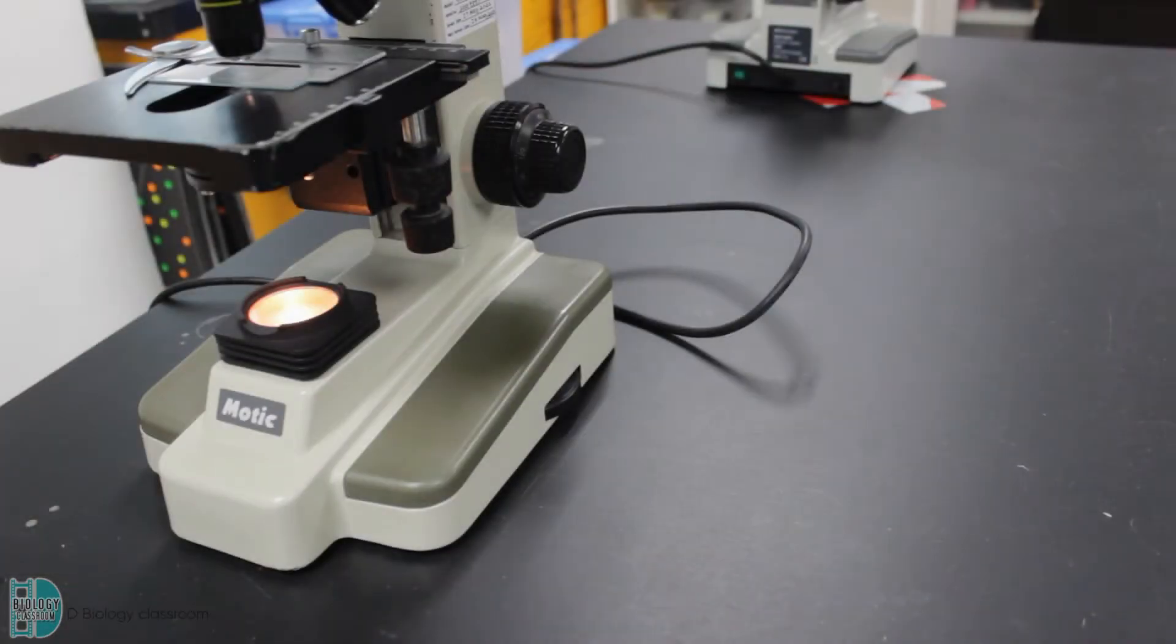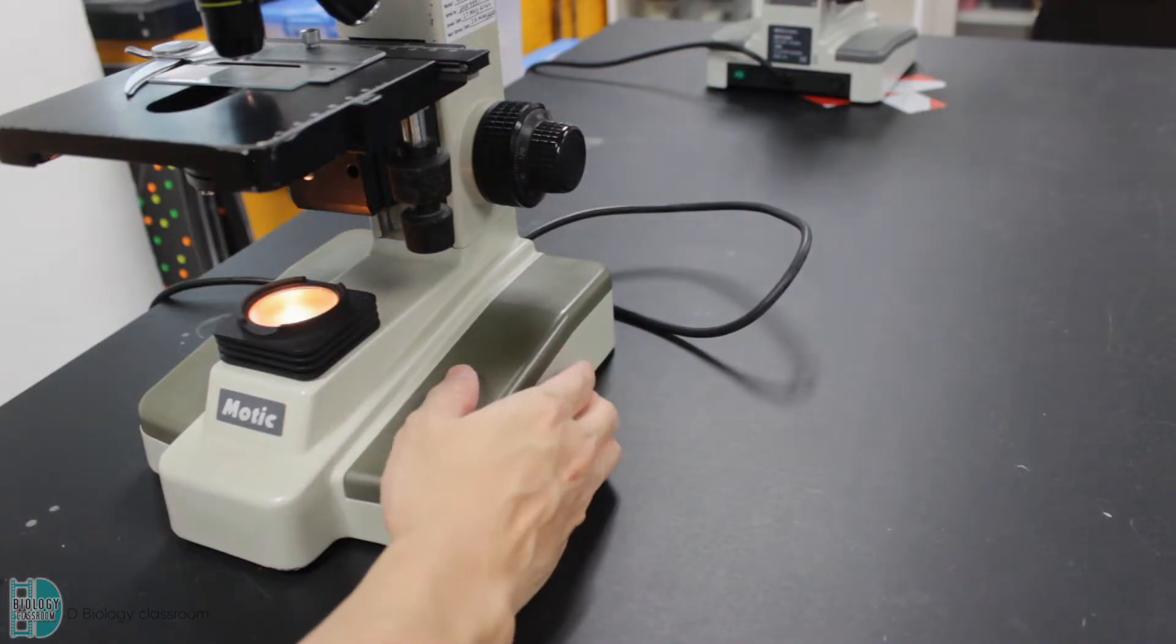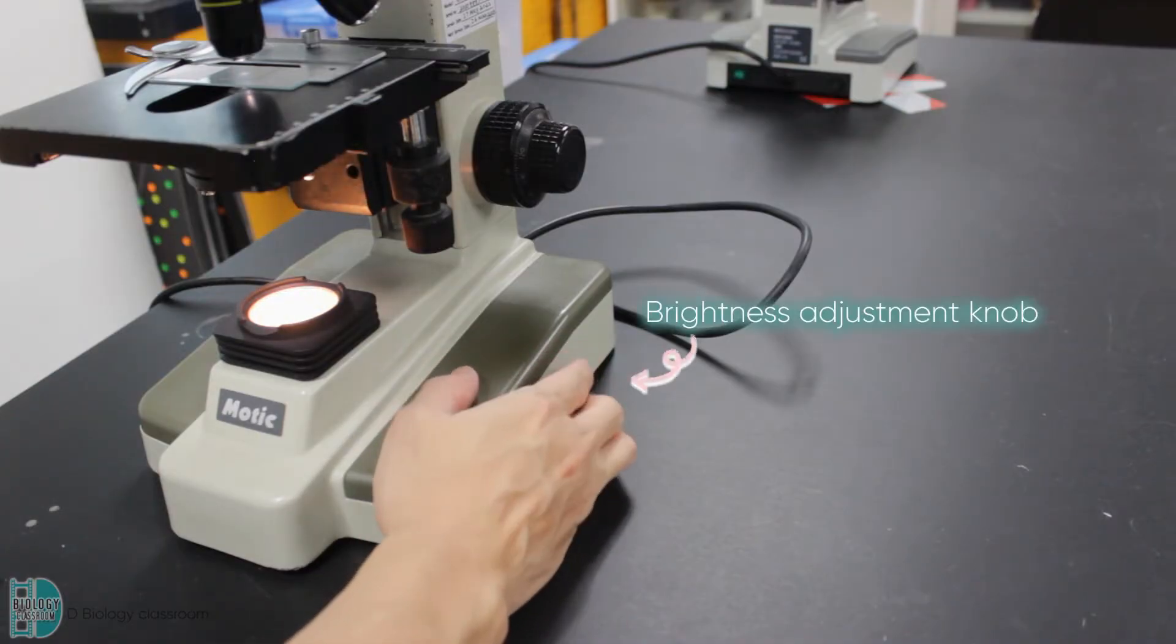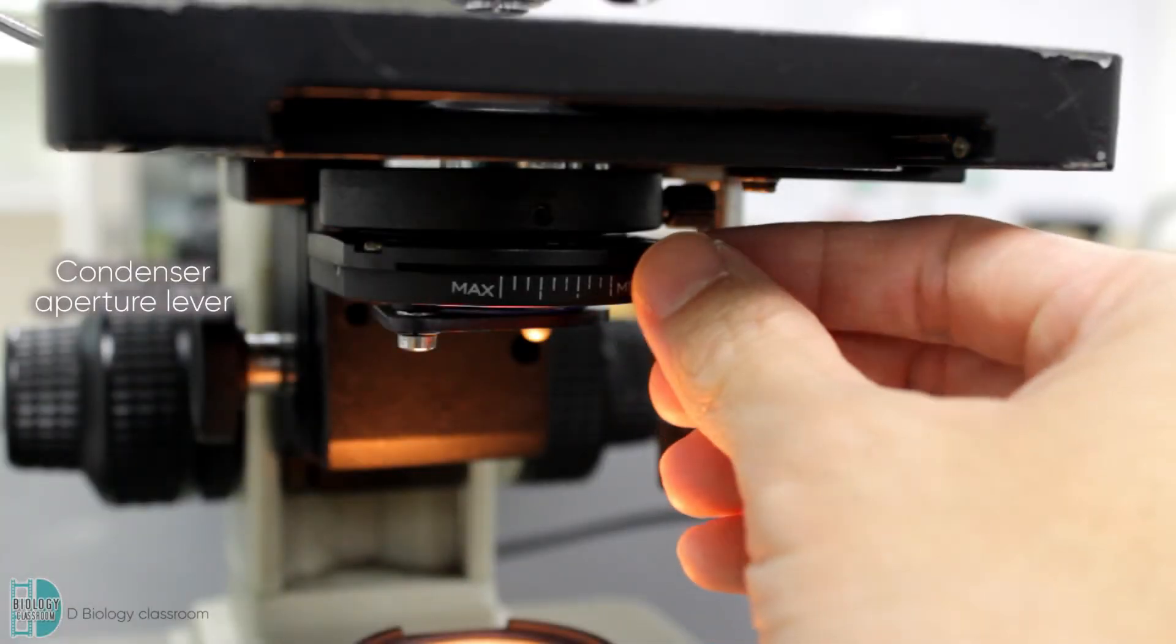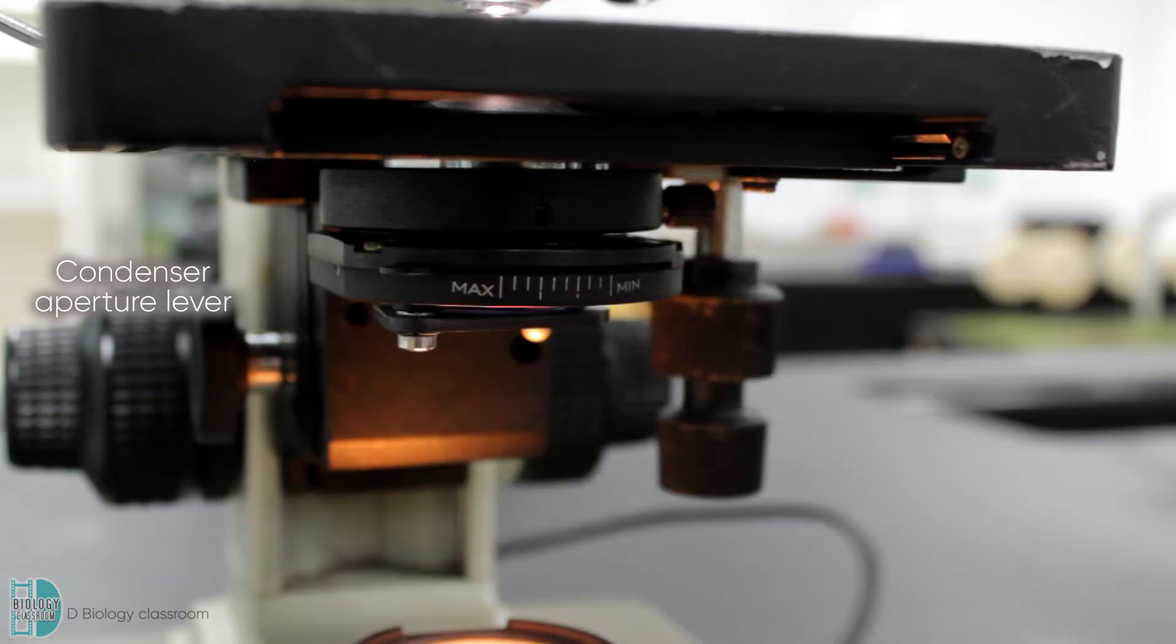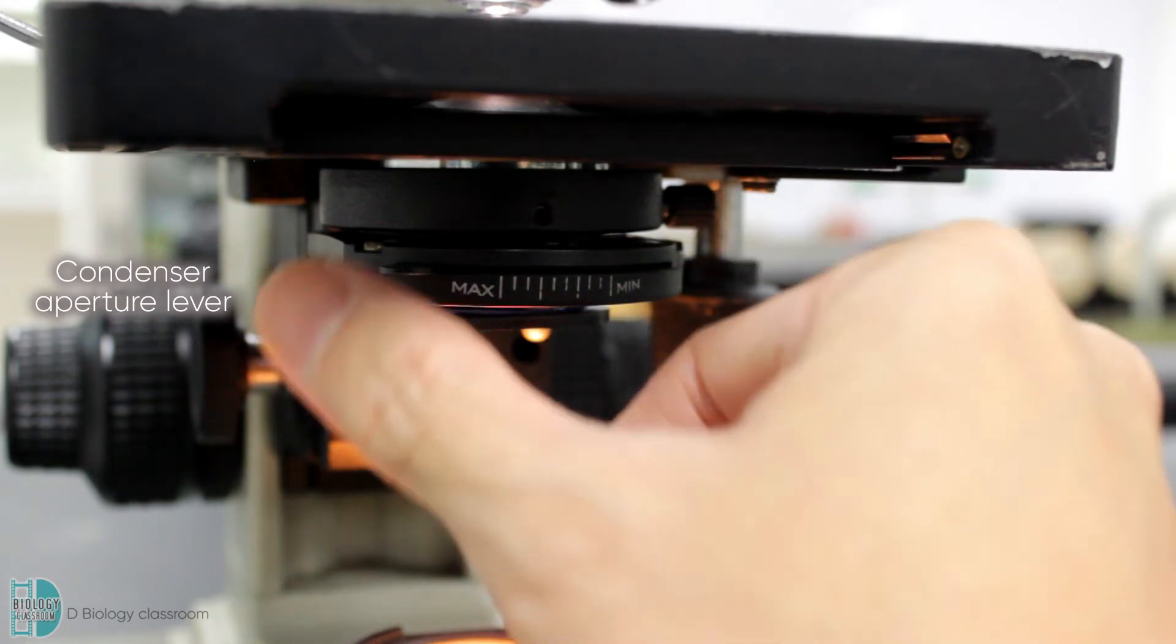If you are not happy with the brightness, there are two ways to adjust the light. Firstly, you can use the brightness adjustment knob near the base to control the level of illumination. You can also use the condenser aperture lever below the stage to allow different amounts of light to pass through the specimen.